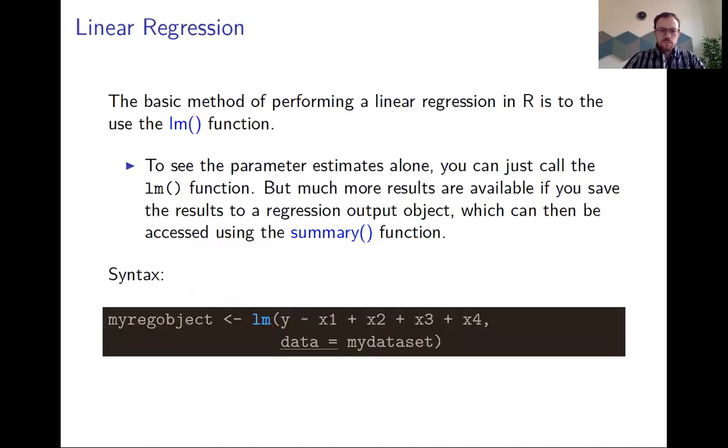The basic linear regression in R is done by using the LM function, and LM stands for linear model. LM by default just gives you the coefficient estimates, however if you save the output from the function you can get a lot more information about your regression by using, for example, the summary function on that object.